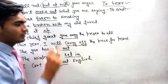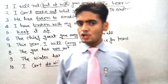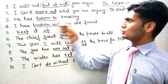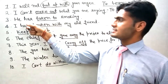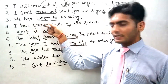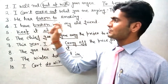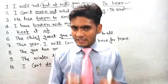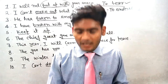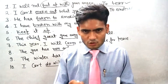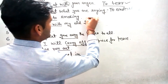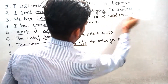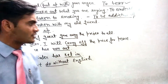तीसरा sentence है: 'He has taken to smoking.' यहाँ phrasal verb की first form है 'take to', और यहाँ present perfect में third form 'taken' use हुई है — has/have के साथ। Take to का meaning होता है किसी चीज की आदत पड़ जाना, किसी चीज का addicted हो जाना। So take to means: to be addicted to something.